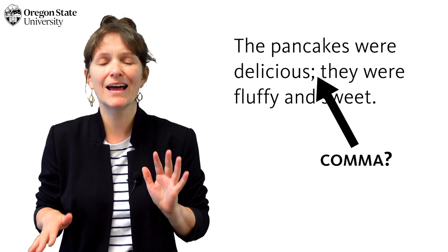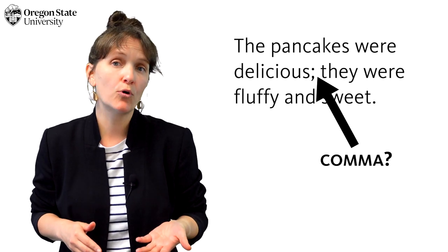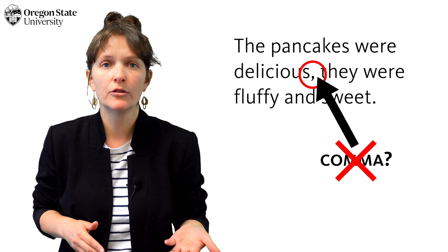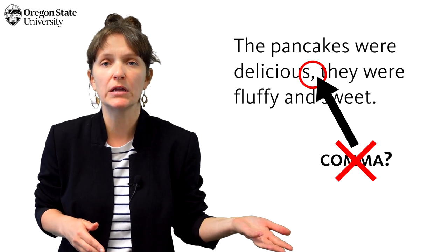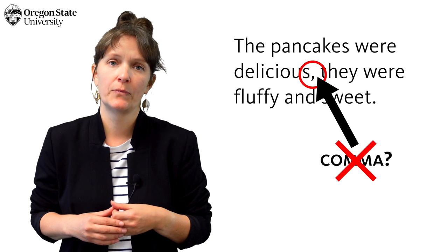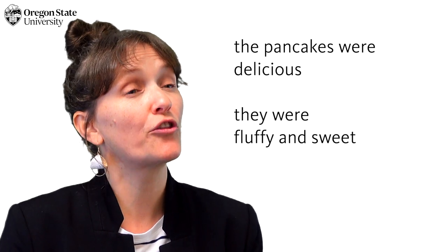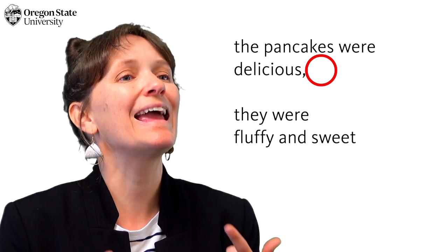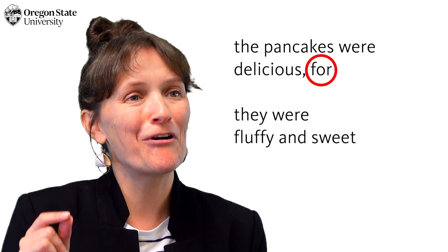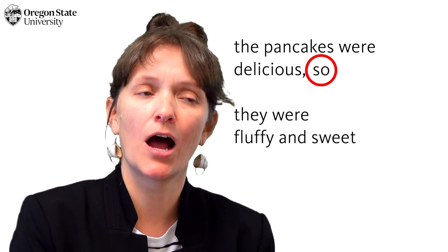You might be wondering: couldn't I do the same thing with a comma? Well, not exactly like this. If we tried to rewrite our pancake example with a comma alone — 'The pancakes were delicious, they were fluffy and sweet' — it wouldn't work. A comma alone isn't strong enough to connect the sentences. That's called a comma splice, which we'll discuss in a future video. If you have two sentences that are related to each other, you can connect them with a comma and a coordinating conjunction — for, and, nor, but, or, yet, so — but not a comma alone.